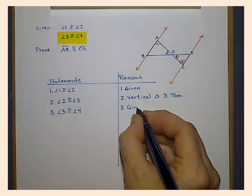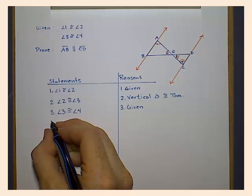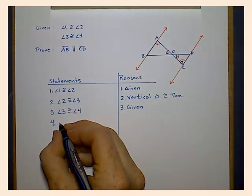And now we can use the transitive property, twice actually, but I'm only going to write it once, to show that these angles are congruent.